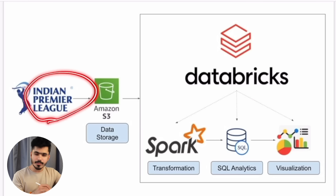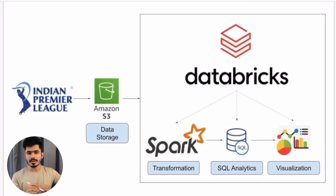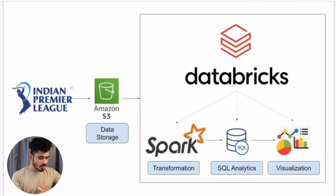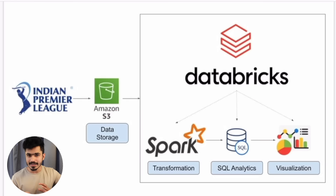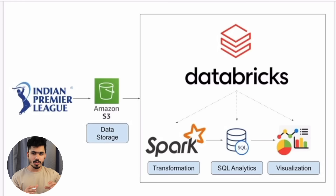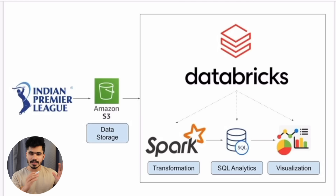We will be using the IPL dataset. IPL is the Indian Cricket Premier League — very popular. We will use this dataset and upload or load this data onto Amazon S3. Amazon S3 stands for Simple Storage Service, especially used for storing any types of data. It is an object storage, so you can store any data you want — such as CSV, Parquet, audio, video, anything you want.